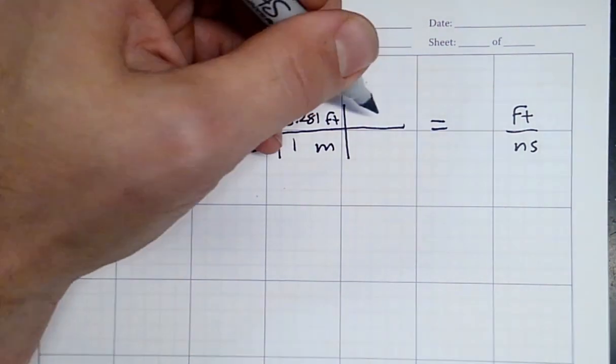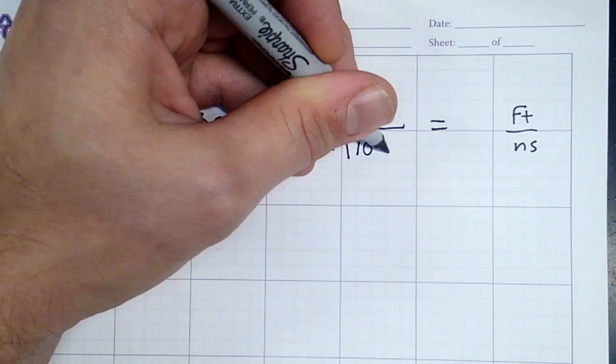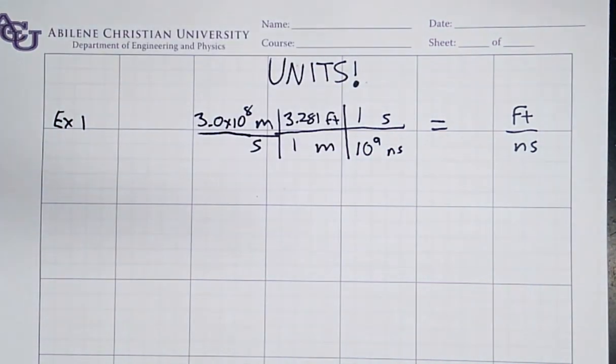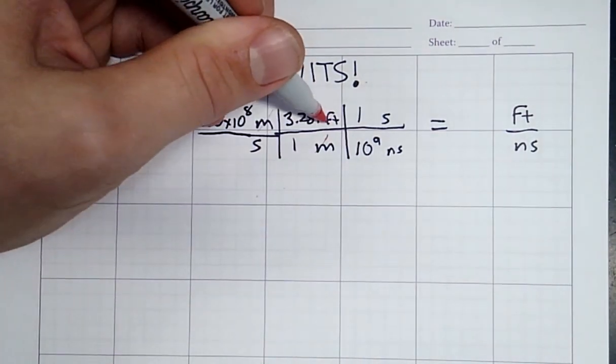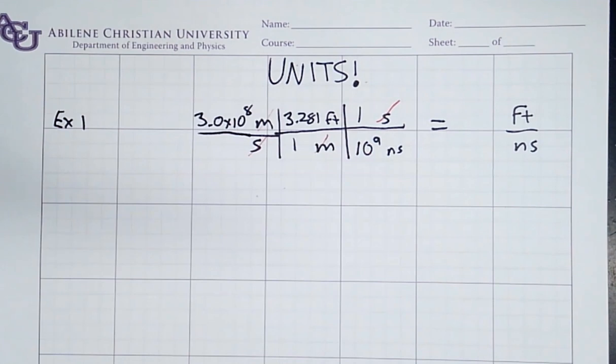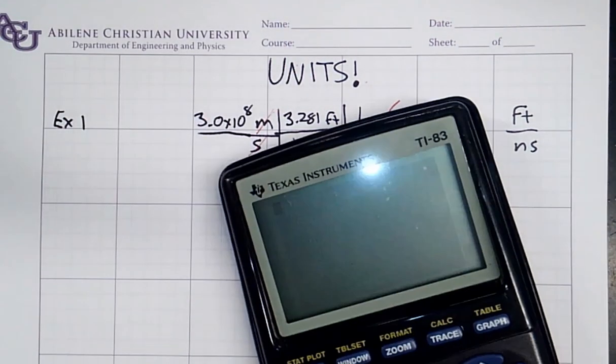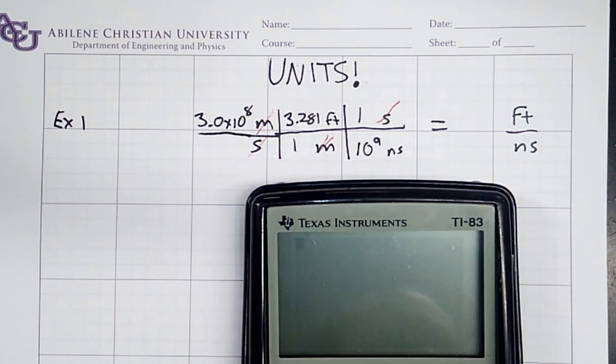I'm going to say 1 second equals 10 to the ninth nanoseconds. 10 to the ninth is 1 billion nanoseconds. And now, when I take my units, I cancel out my meters, I cancel out my seconds, and I'm left with feet per nanosecond. Let's go ahead and try this on the calculator. Now, these are the absolute worst calculators that money can buy. But it's what most students these days seem to have in college, so we'll give it a try.